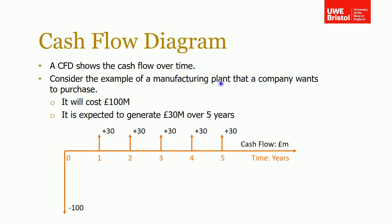I'm going to use the same example throughout all these slides. Consider a manufacturing plant: the company wants to purchase it, it costs 100 million upfront, and it's expected to generate 30 million over five years. You can see the 100 million initial investment line, and then five 30 million arrows spaced out over the five years showing the cash flow over this time.